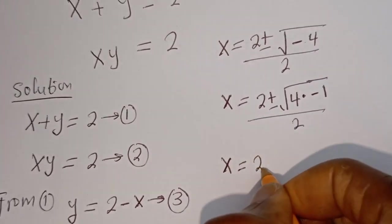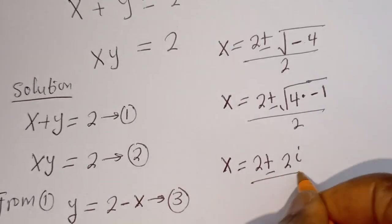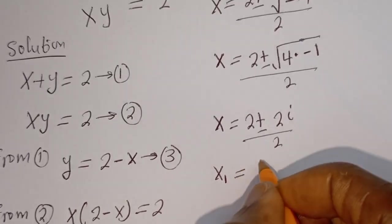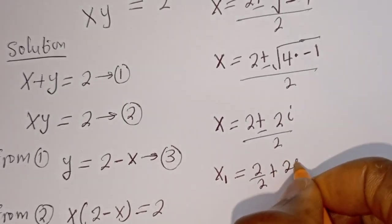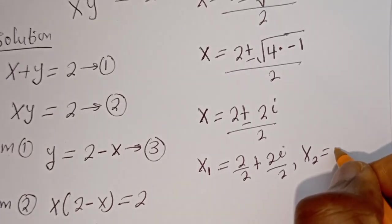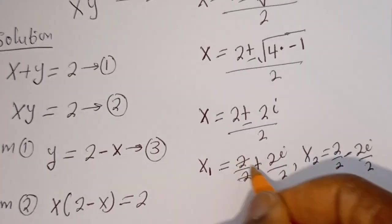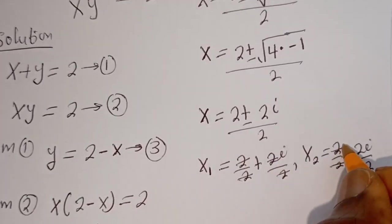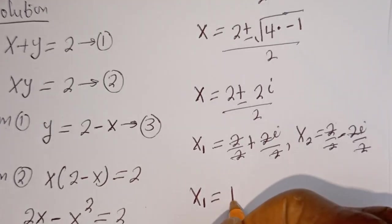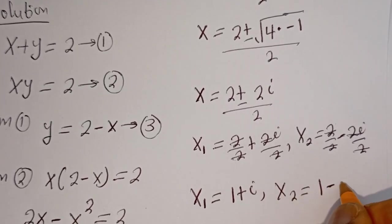s is equal to 2 plus or minus — the square root of 4 is 2 and the square root of minus 1 is i — all over 2. The 2s cancel: s is equal to 1 plus or minus i. Therefore S1 is equal to 1 plus i, and S2 is equal to 1 minus i.